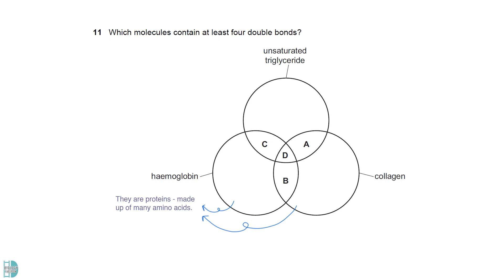Hemoglobin and collagen are proteins. They are made up of numerous amino acids. Each amino acid has a C double bond O near the carboxyl end. So, they both have many double bonds. Unsaturated fatty acids have at least one carbon-carbon double bond in the hydrocarbon chain. There are three carbon double bond O at the three ester bonds. So, there should be at least four double bonds as well.